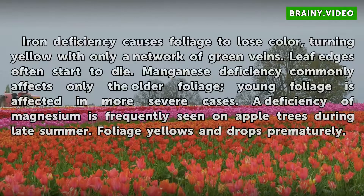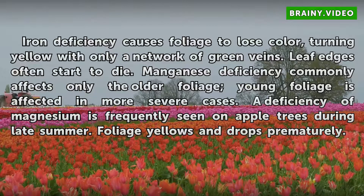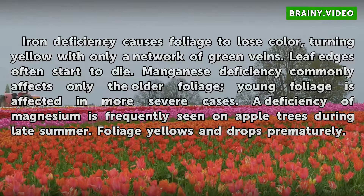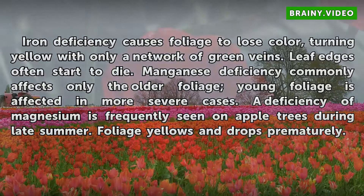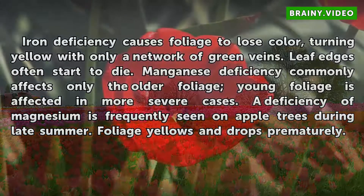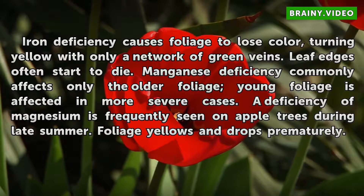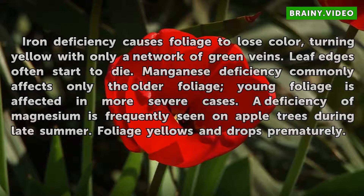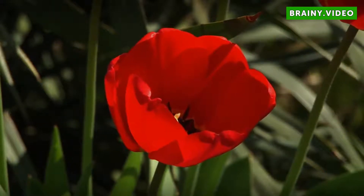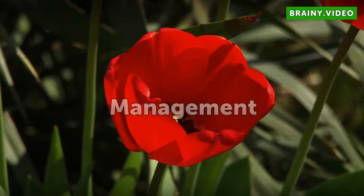Iron deficiency causes foliage to lose color, turning yellow with only a network of green veins remaining; leaf edges often start to die. Manganese deficiency commonly affects only the older foliage, though young foliage is affected in more severe cases. A deficiency of magnesium is frequently seen on apple trees during late summer, where foliage yellows and drops prematurely.